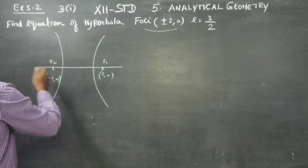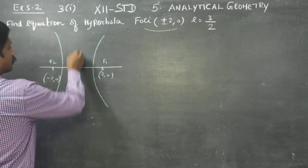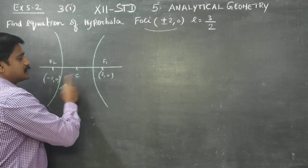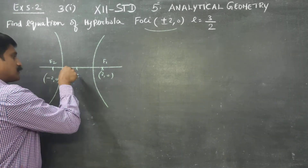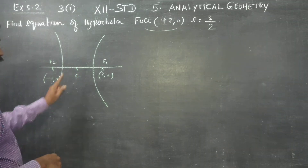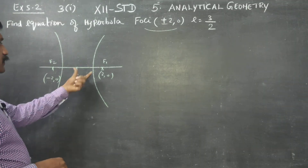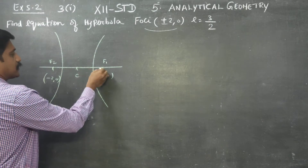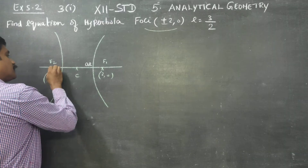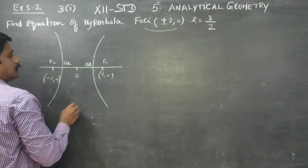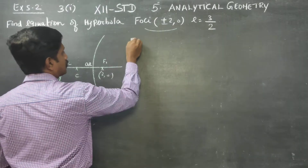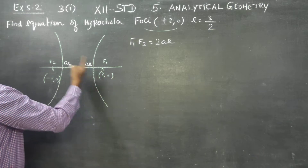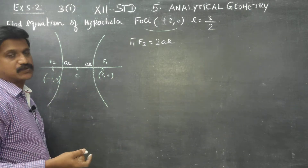F1 and F2 are the foci. The center will be the midpoint of these two points. The distance from focus to center is 'ae', so the distance F1 to F2 is 2ae.